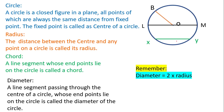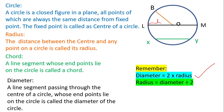Now we will take the relationship between radius and diameter. You have to remember these two points: diameter equals two times the radius, and radius equals half of the diameter. As you can see in this diagram, there are two radii which form the diameter. Because of that, diameter equals two times the radius, and radius equals diameter divided by two.